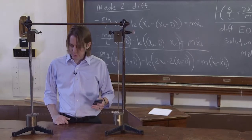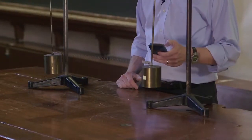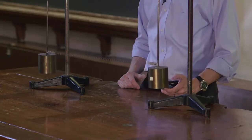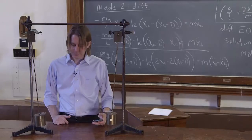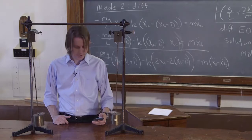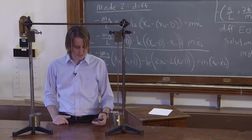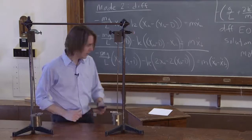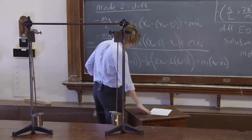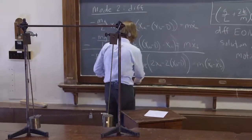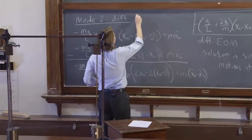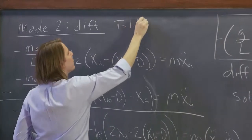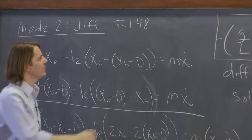And go. 1, 2, 3, 4, 5, 6, 7, 8, 9, and 10. And I got about 14.8. So I've got 10 times the period, so the period is 1.48 seconds.